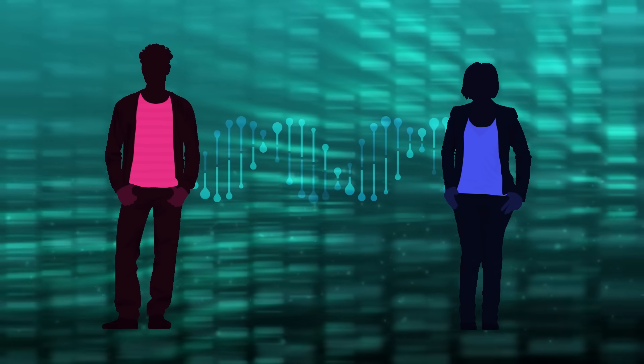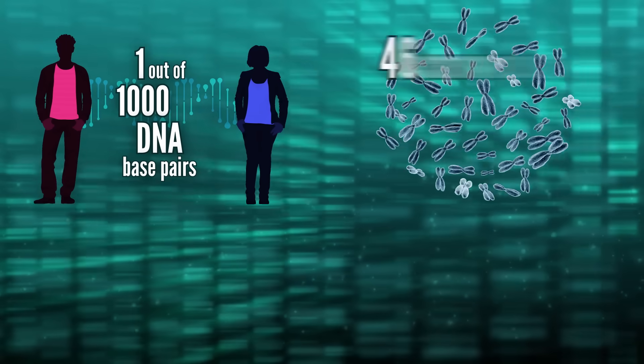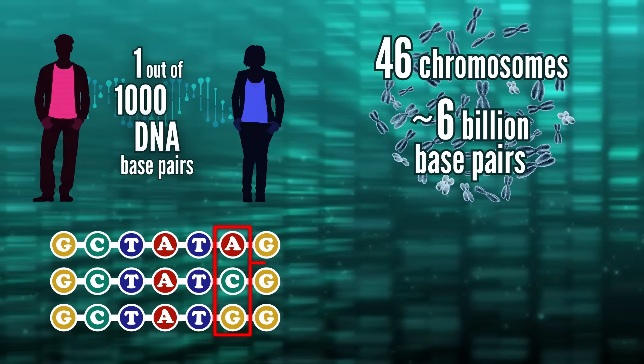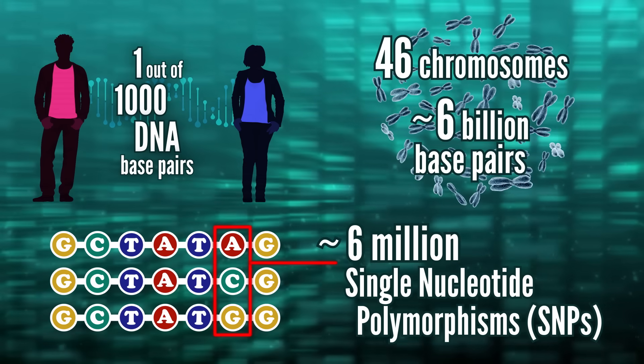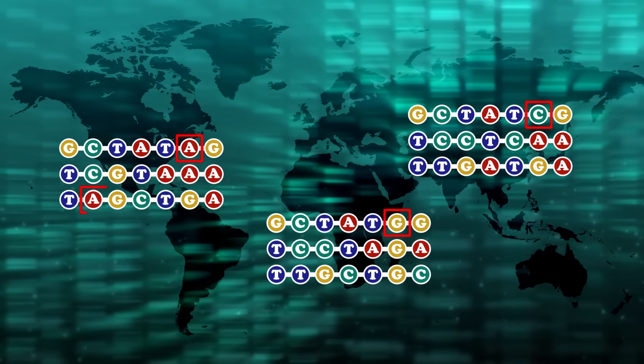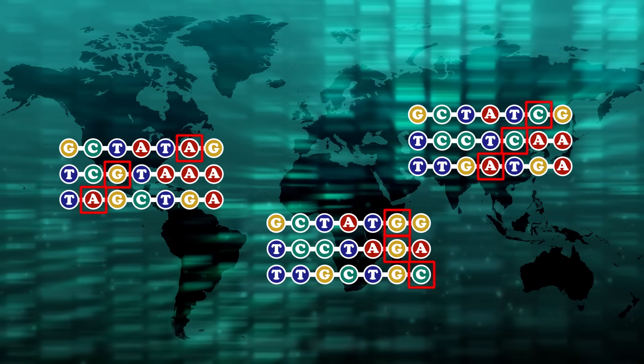Today, any two humans only differ by about one out of a thousand DNA base pairs. But our genome is so big, that's still millions of single letter differences, or SNPs, for single nucleotide polymorphism. We tend to see combinations of these changes, chunks of SNPs, associated with different geographic locations.